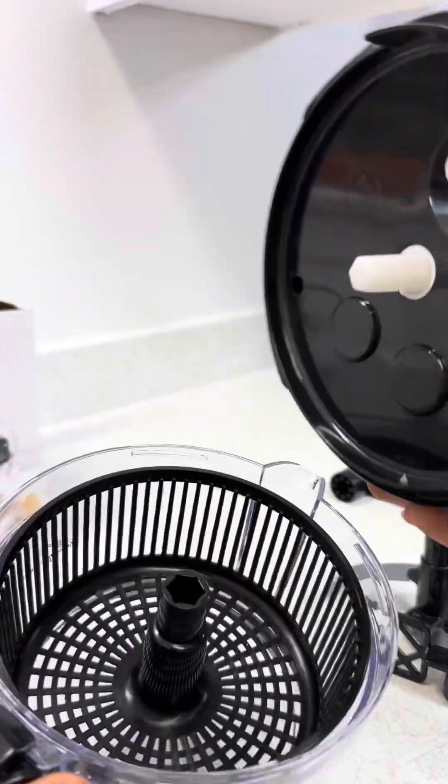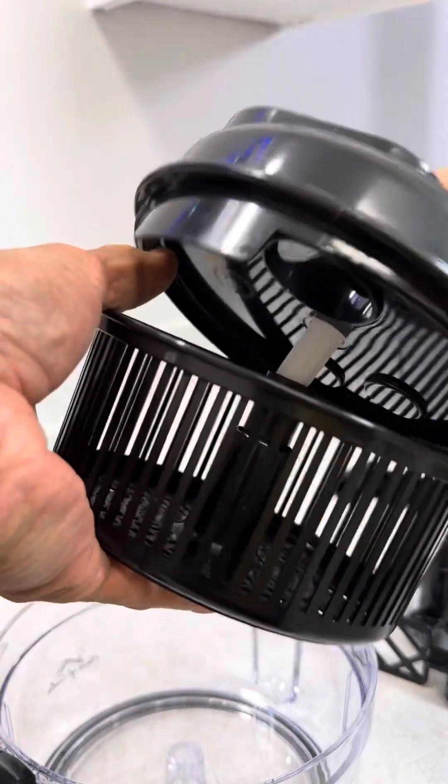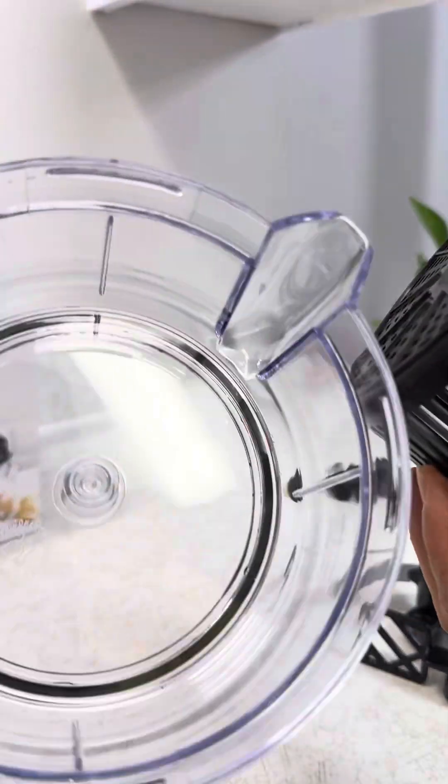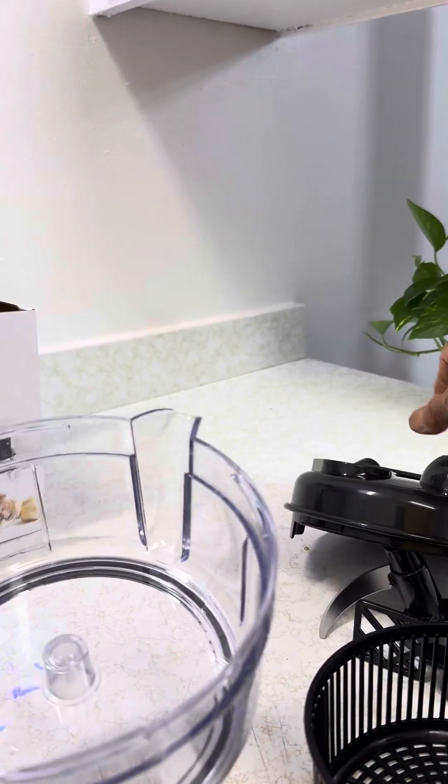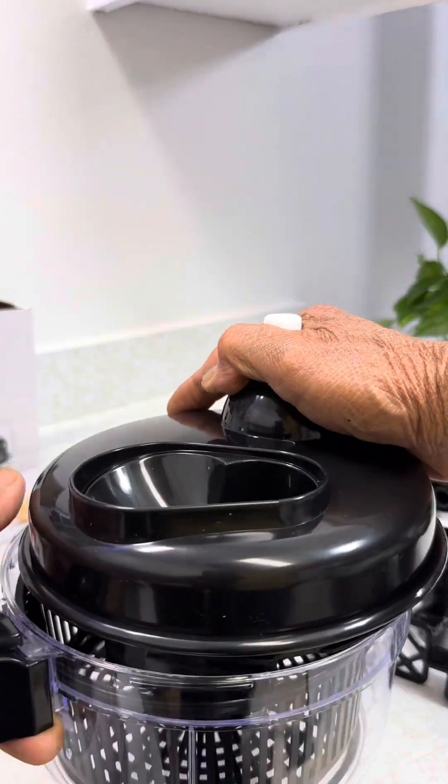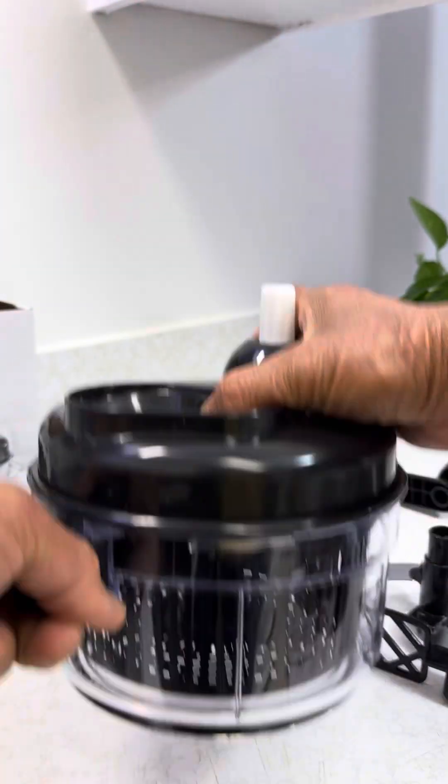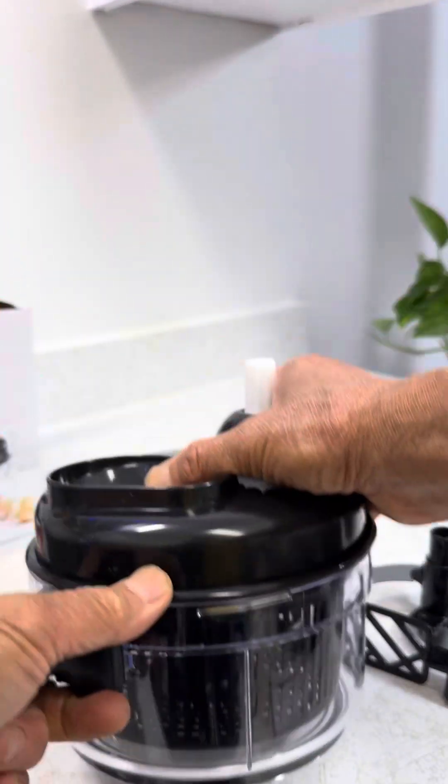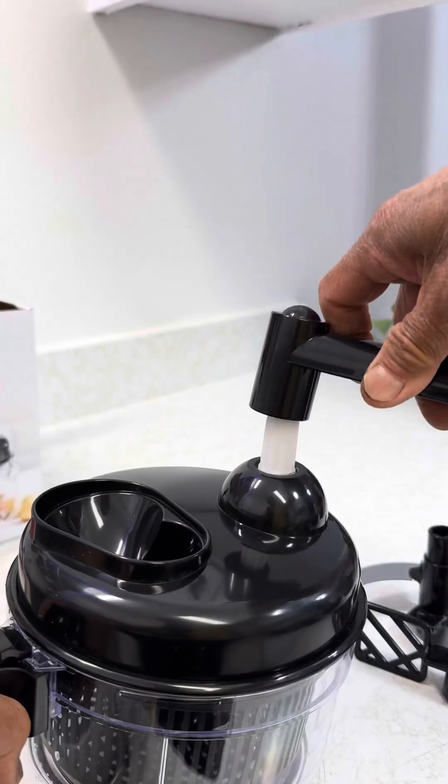When you put the basket in here, make sure it lines up in here and also lines up the bottom part here. Line this part up here, line it up, and then turn it clockwise to lock it. And this is the handle—put it here like that.